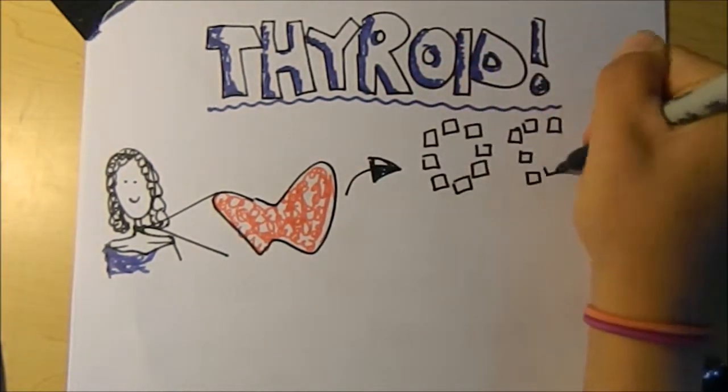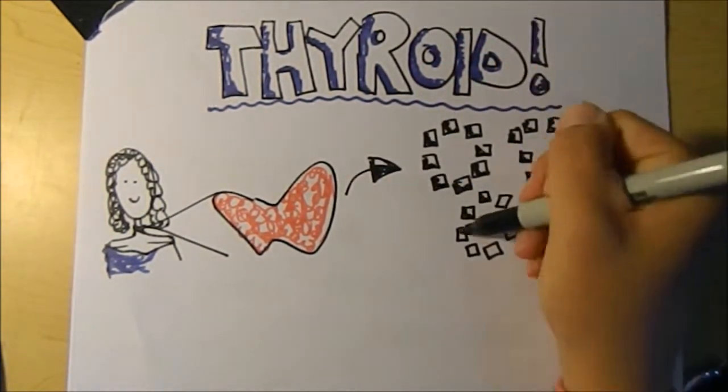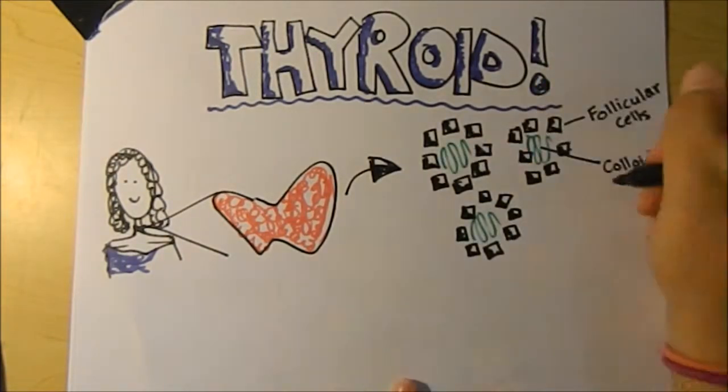At a closer look, the thyroid contains rings of follicular cells where thyroid hormones are made. They are stored in the colloid.